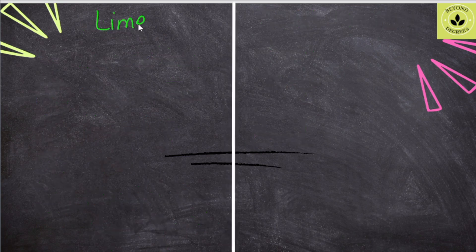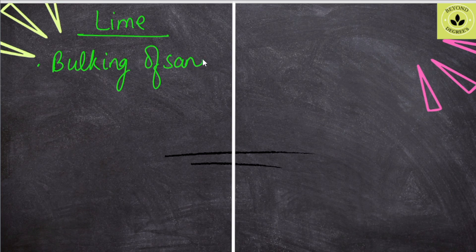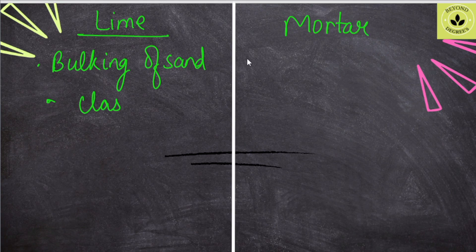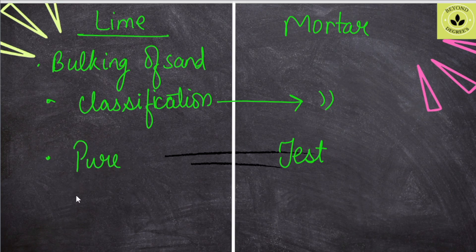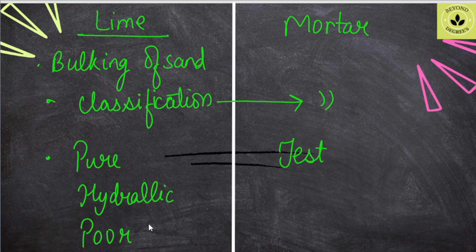The next topic is lime and mortar, which is also very important. In lime, we ask about bulking of sand — what is bulking of sand, and at what percentage of water does bulking of sand occur? This is also an important topic from soil mechanics. Classification of lime and mortar — they both have classifications. We ask tests about lime and mortar. What is pure lime, called calcium hydroxide? The slaking of lime, the calcination process — all these topics related to lime are very important.